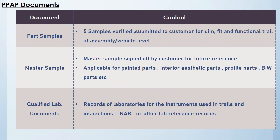Along with all these documents, five parts are supplied to customers for their dimensional and material testing as well as fit and functional verifications at their assembly level. One master sample is signed off and kept at the supplier end — in some cases also kept at the customer end. This master sample is applicable for painted parts, interior parts, and profile and BWO parts. Qualified lab documents are records of the laboratories and instruments used for verification during PPAP, including tracking records and reference documents from accredited labs.